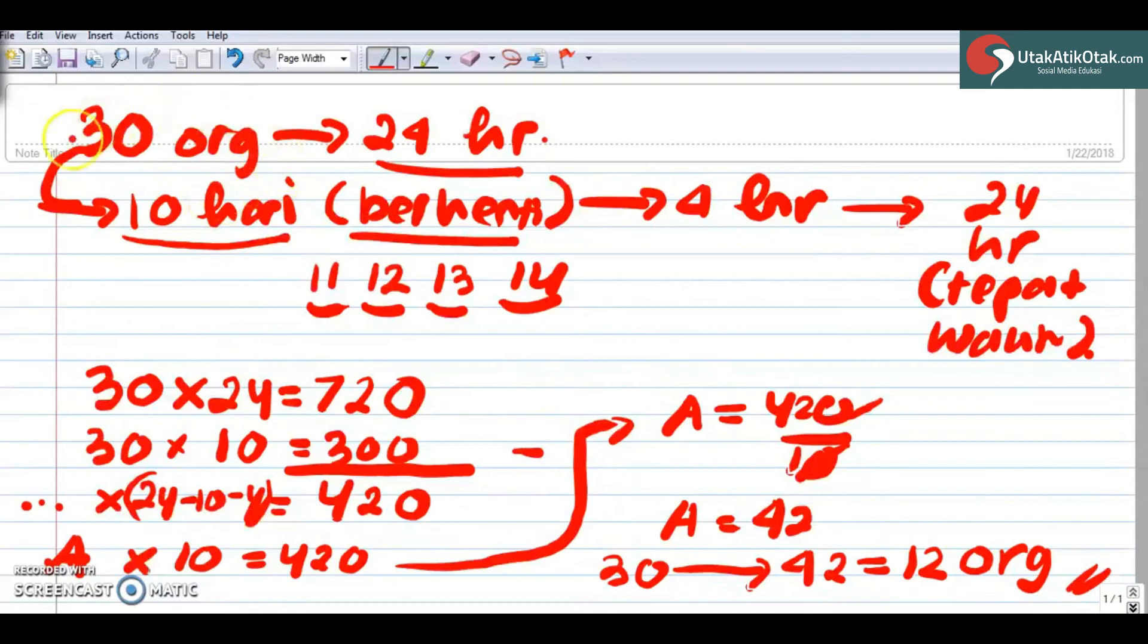Jadi kita ada 30 orang 24 hari. Setelah 10 hari bekerja, mereka berhenti selama 4 hari, yaitu 11, 12, 34, 14-nya dia berhenti. Nah, untuk mencapai 24 hari secara tepat waktu, jadi kita nggak boleh kurang dari ini atau tidak boleh lebih dari ini. Maka kita bisa menggunakan cara ini.